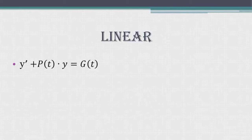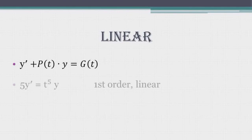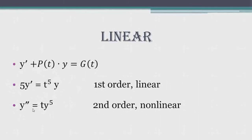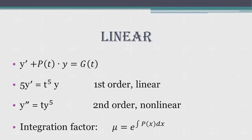Let's talk about the first one: linear differential equations. A linear ODE is given in the form y prime plus P of t times y equals G of t. This is a linear ODE because it has order 1. Otherwise the equation is said to be nonlinear. For example, the equation y prime plus y over 5 equals t squared e to the minus t is called a first-order linear ordinary differential equation. We solve linear ODEs by using the integrating factor — if we multiply the expression by the integrating factor, we are able to find the solution.